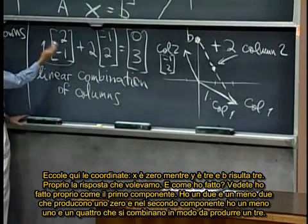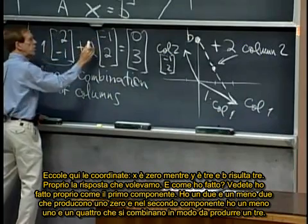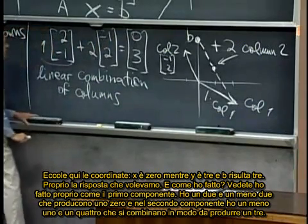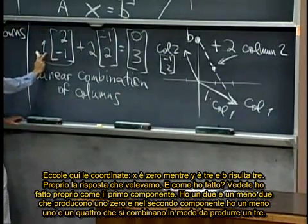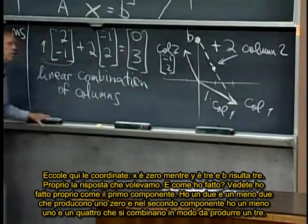And how do I do it? You see, I do it just like the first component, I have a two and a minus two that produces a zero, and in the second component I have a minus one and a four, they combine to give the three.